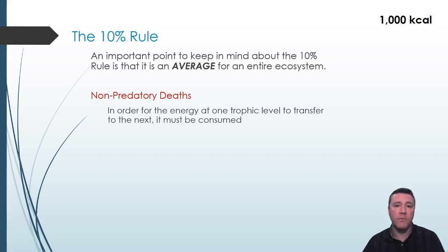If that doesn't happen, say because the gazelle dies of some other cause rather than predation by a cheetah, then its energy doesn't transfer to the next trophic level. Although ecosystems do vary, this is the case about 50% of the time. That leaves us with 500 kilocalories remaining.